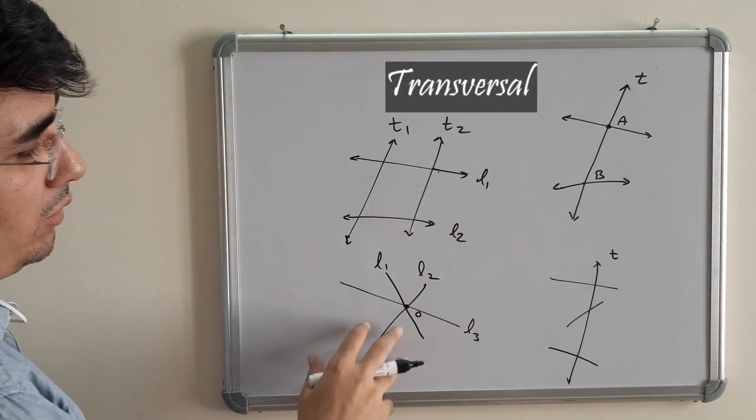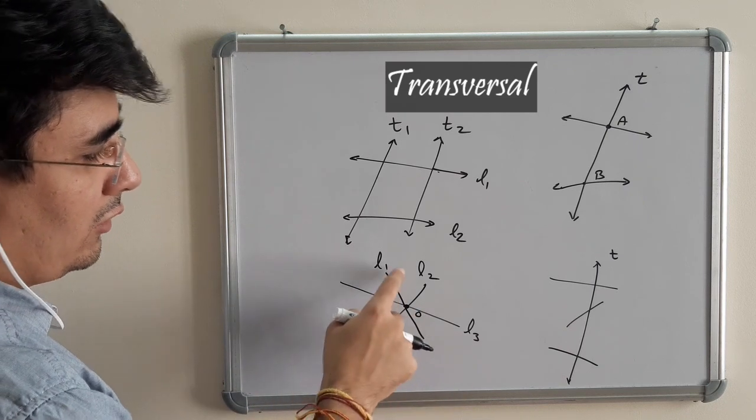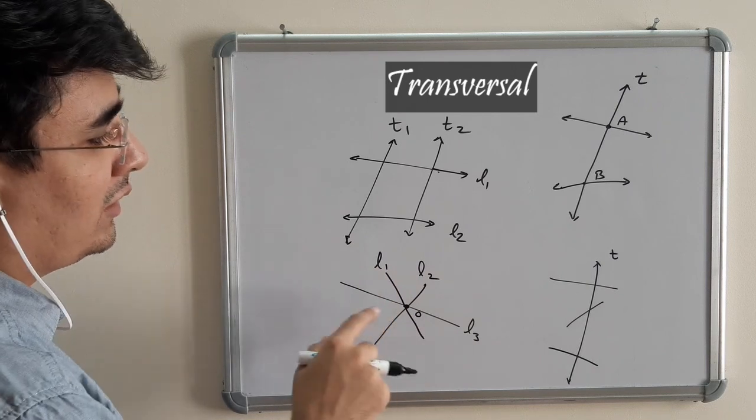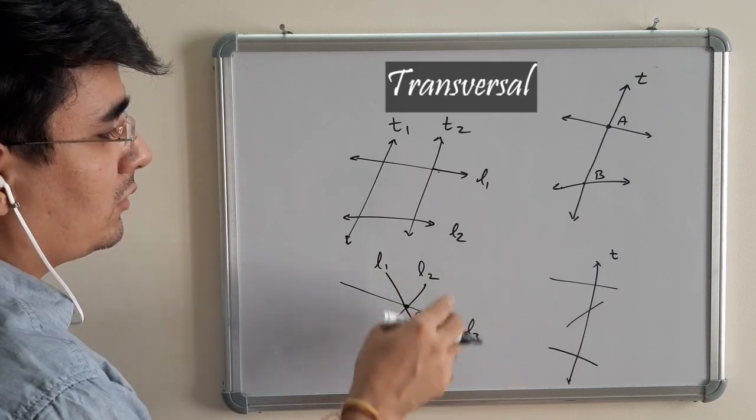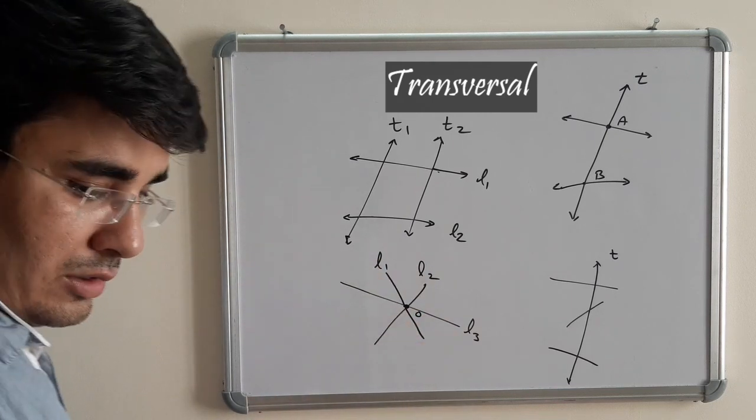That is important. Here line 3 is obviously intersecting with line 1 and line 2. But they are intersecting at point O. Hence, this is not a transversal. Similarly, these two are not a transversal. So basic concept of transversal is this.